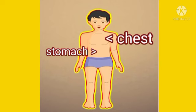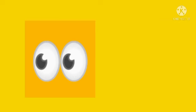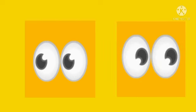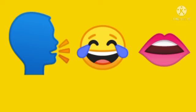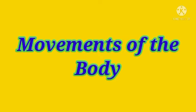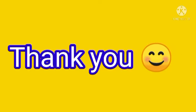By keeping your head straight, if you look to your right and left side, you are moving only your eyes. And when you talk or laugh, you are moving your lips. In this way, all the parts of a body move. That concludes the lesson: Movements of the Body. Thank you.